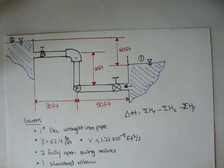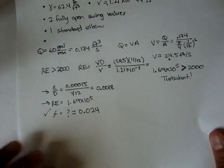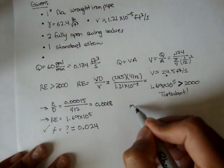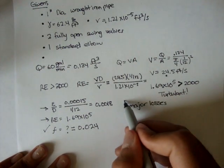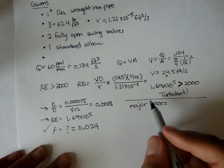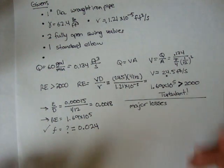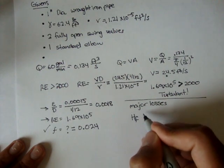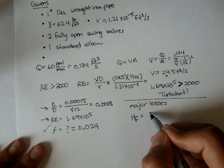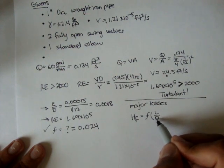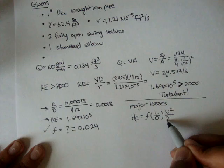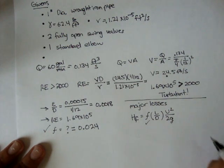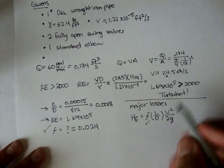So let's do our major losses first. Our major losses are associated with pipe length. And remember, our formula was the frictional factor times the length over the diameter of the pipes, times the average velocity squared over 2g. So we know the frictional factor.